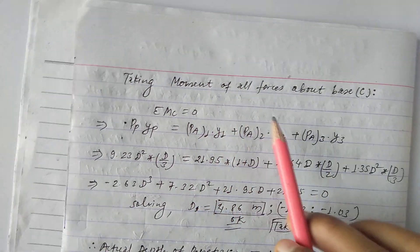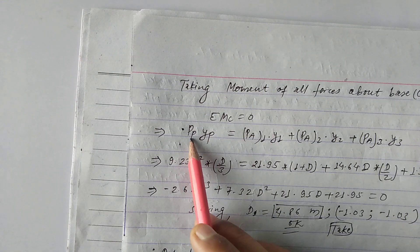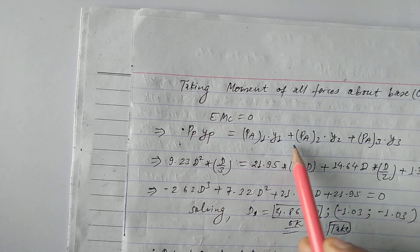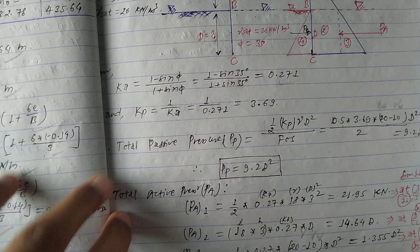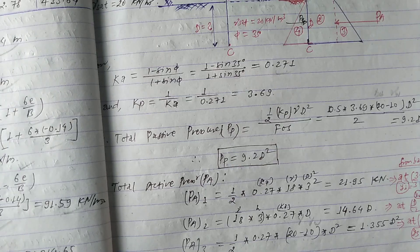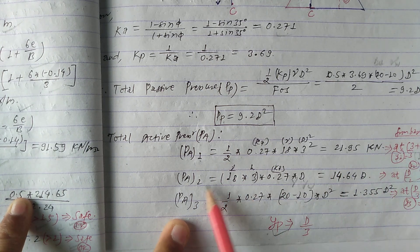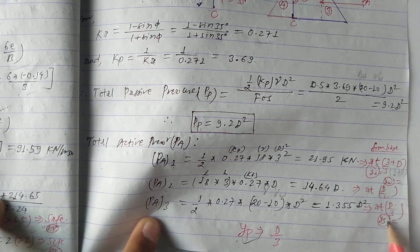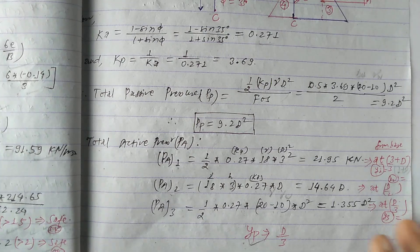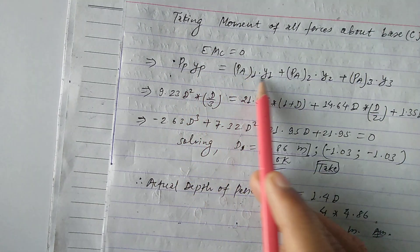Taking the moment of all forces about point C. When we take moments about C, PP × yp equals PA1 × y1 plus PA2 × y2 plus PA3 × y3. So PP is set equal to the sum of all active pressure moments divided by the respective moment arms.